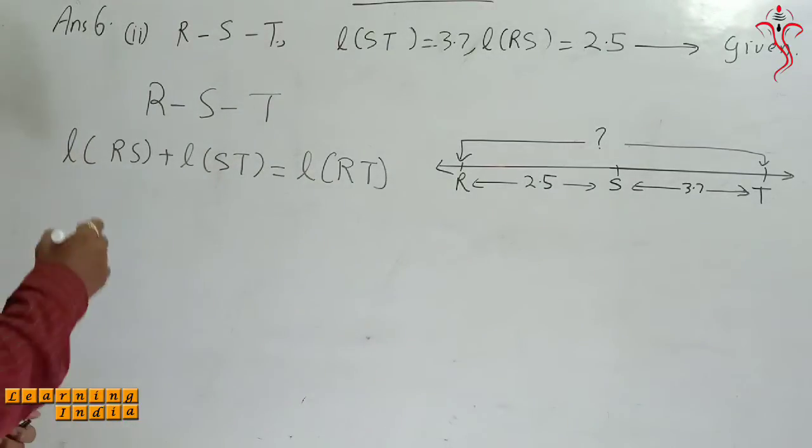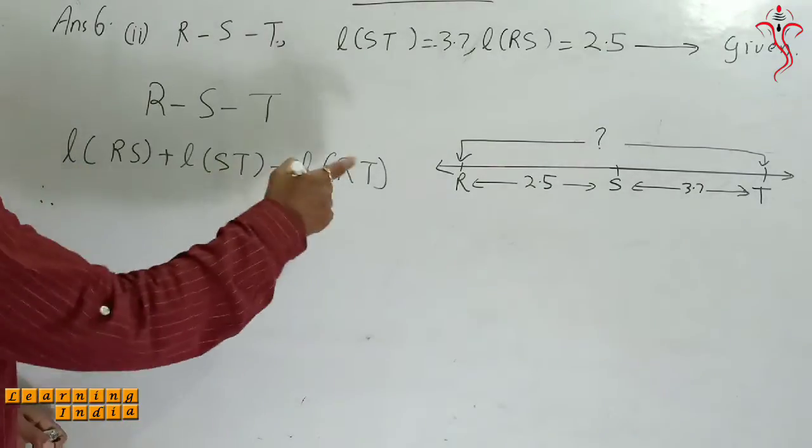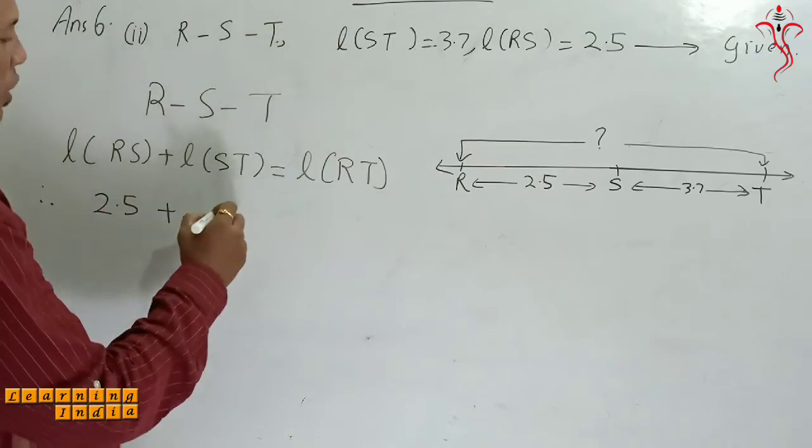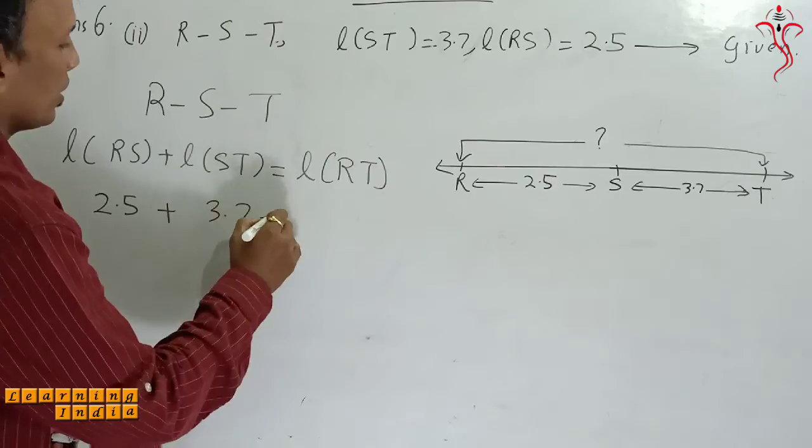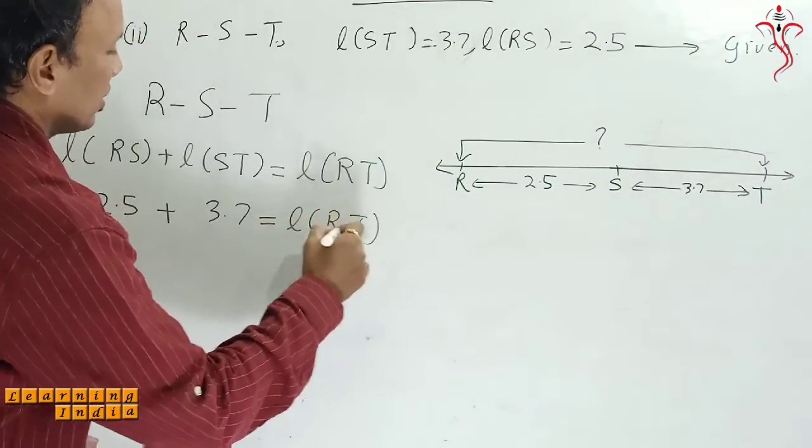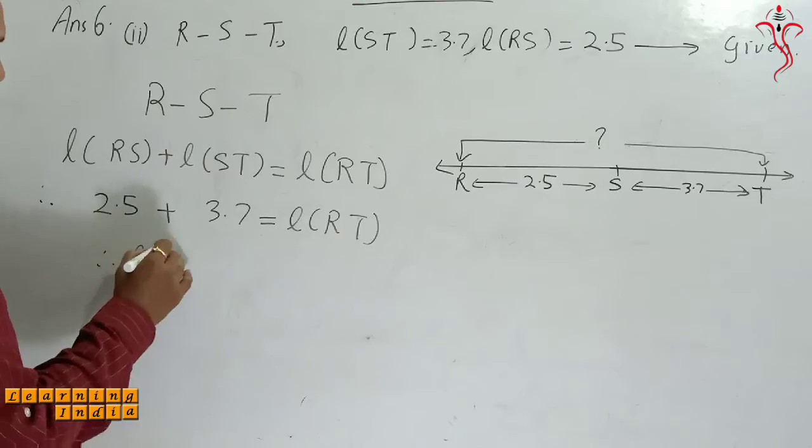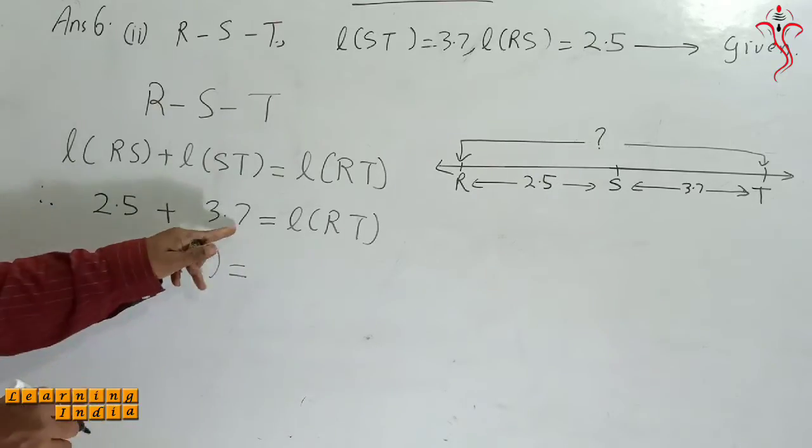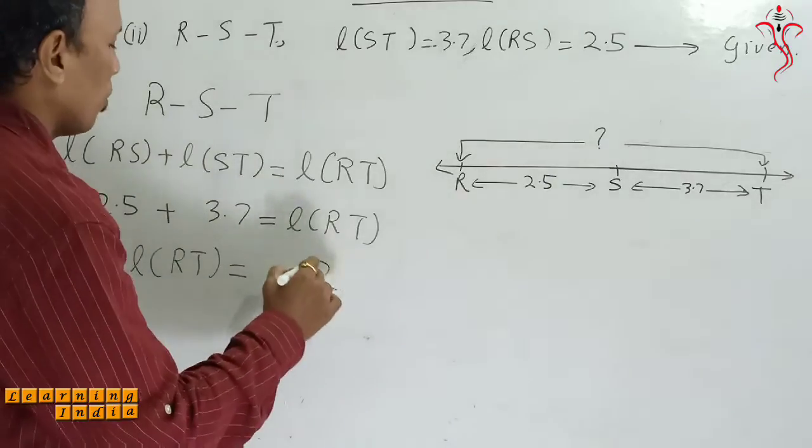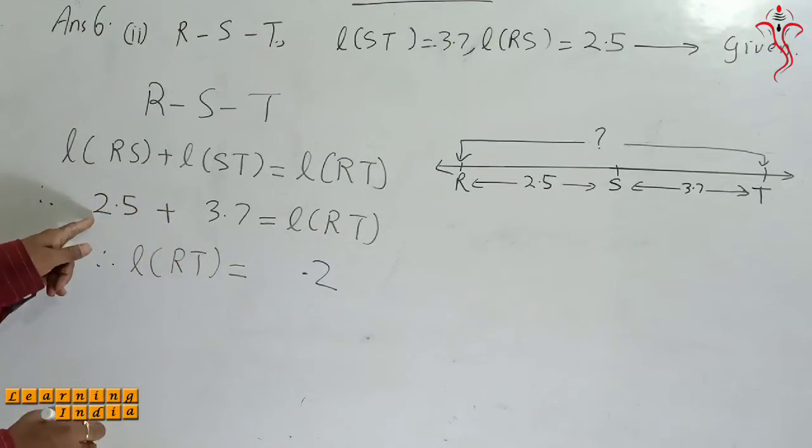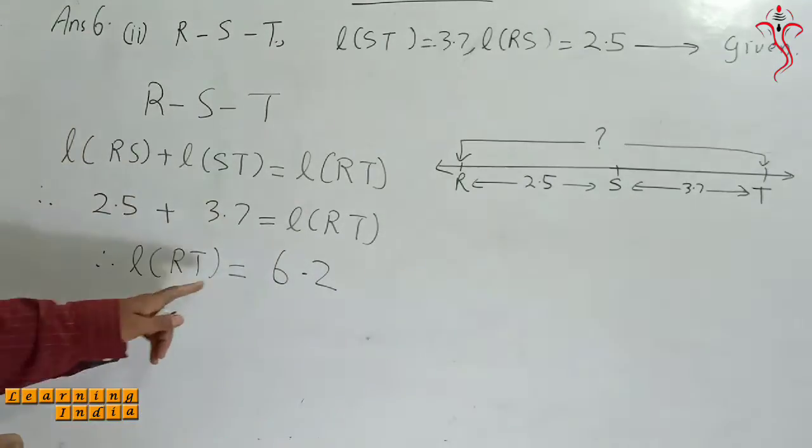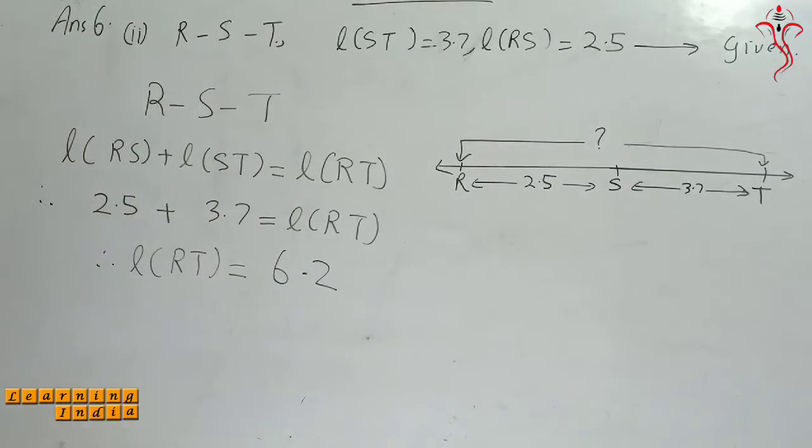It is equal to length RS ka value 2.5 plus ST ka value 3.7 is equal to length RT. Therefore length RT is equal to, 7 plus 5 is 12, 3 plus 2 is 5, plus 1 is 6. So this is how we got the answer of RT is 6.2.